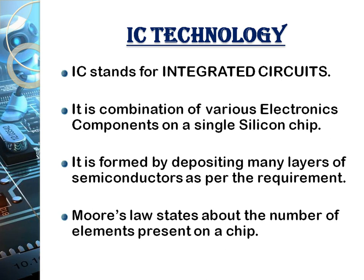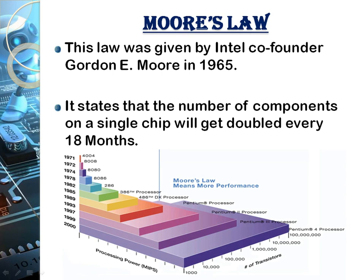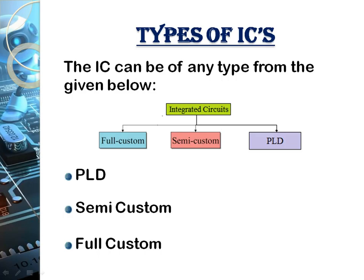An IC is a combination of various electronic components on a single silicon chip. Gordon E. Moore, co-founder of Intel, gave a law in 1965 stating that the number of components on a single chip will double every 18 months. This law has been followed through the years and remains true even today.